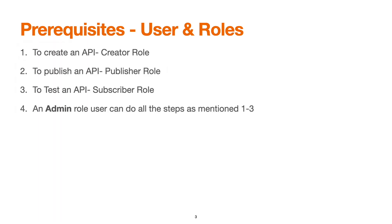For prerequisites — users and roles — to create an API a user must have a creator role, to publish an API they must have a publisher role, and to test an API a user must have a subscriber role. WSO2 API Manager allows segregating user roles so that users can perform certain operations, and we can even include a workflow to restrict user operations.